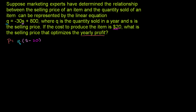Right now we have profit as a function of quantity and selling price. But we have quantity as a function of selling price from the equation above, so we can substitute this whole expression in for quantity. We can rewrite our profit function as negative 30s + 800, times (s - 20).